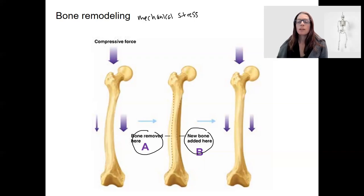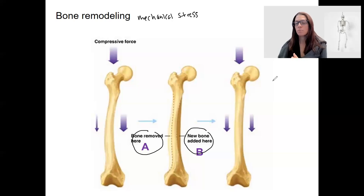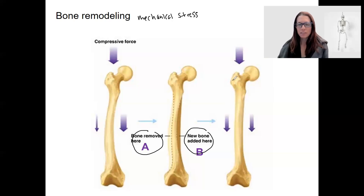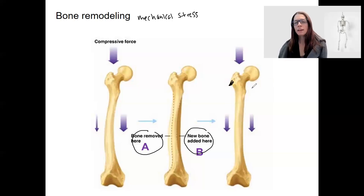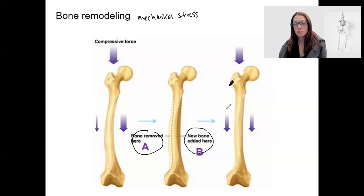Weightlifters — there's a picture of this — actually have thicker bone right where those muscles attach. The muscles they use most for weightlifting would produce the thickest bone right at the attachment point, because the force at that spot builds up bone. Aging also tends to decrease osteoblast activity and increase osteoclast activity, leading to changes in bone structure and deterioration.